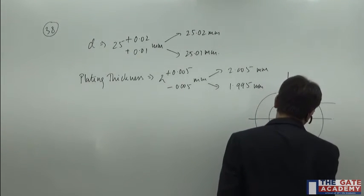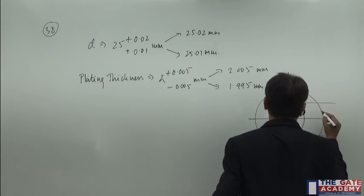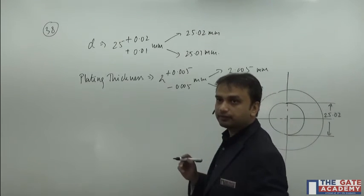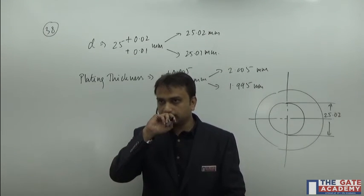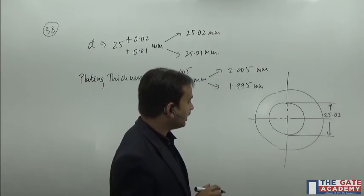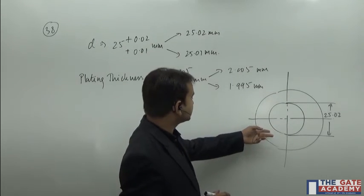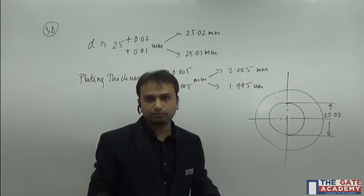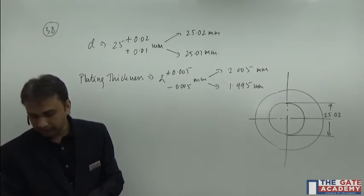So this shaft has the maximum dimension of 25.02. I hope that it will be visible to you over here. And this plating thickness, this thickness of the plating is, suppose let's say the maximum, because we are concerned with the maximum material limit.